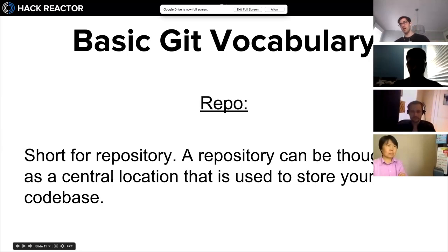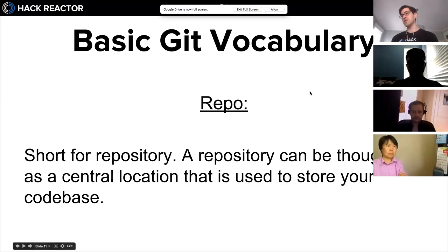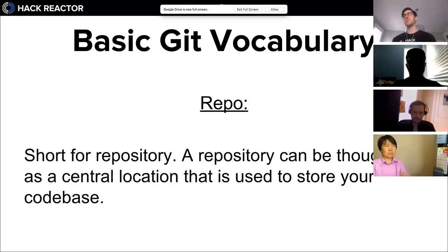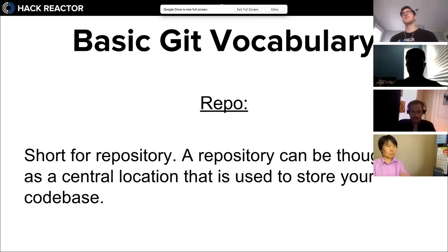'Repo' is short for repository. A repository can be thought of as a central location used to store your code base. Different versions of the same code base can exist within a repository, and different versions of that repository can also exist. In a few minutes I'm going to have you pull down a repository - there will be a version that stays on GitHub and then when you start working on it locally you'll have a different version of that repository.